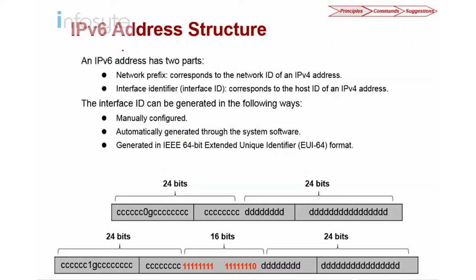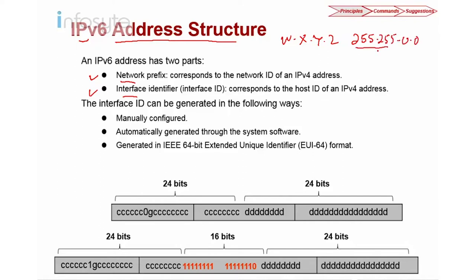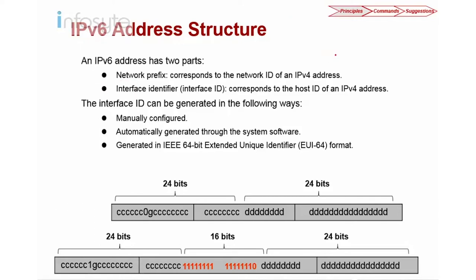Now let's look into the IPv6 address structure. Just like IPv4, IPv6 consists of two parts: one is the network prefix and the other is the interface identifier. In IPv4 we have a subnet mask such as 255.255.255.0 to indicate the network and host portions. In IPv6, we still have the network prefix and identifier, but there is no subnet mask — instead we use prefix length notation.